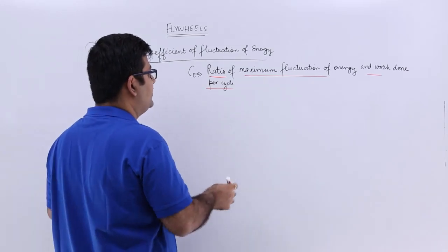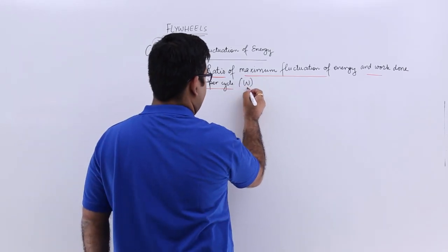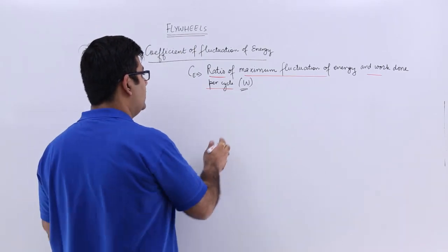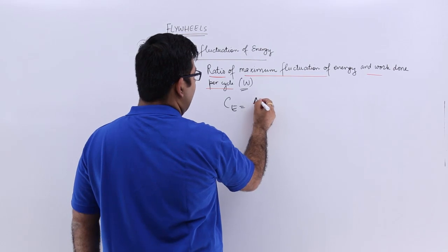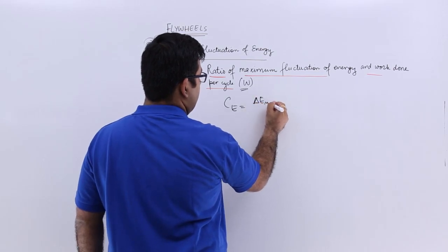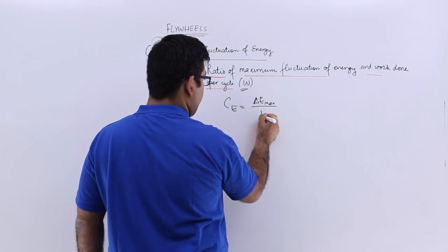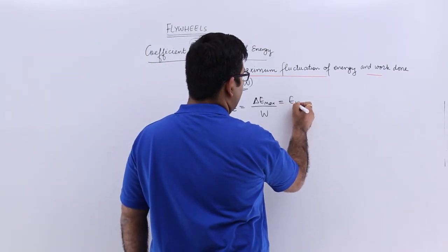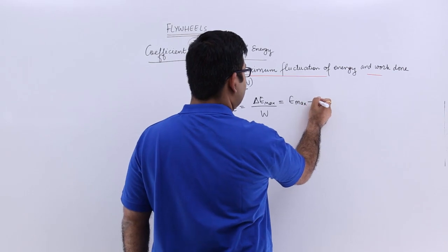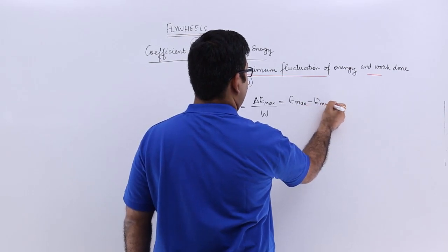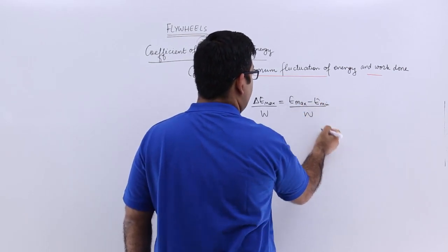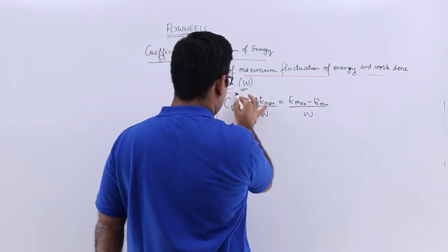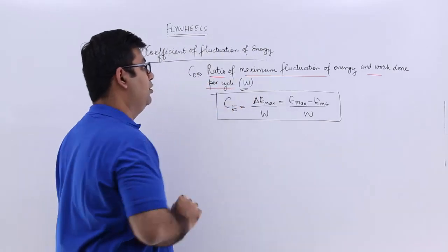So this work done per cycle can be found out by two ways. We will just have a look at that. So CE is delta E max upon work done per cycle. Now we know what is delta E max? It is the difference of E max and E minimum upon work done per cycle. So just make a note of this.